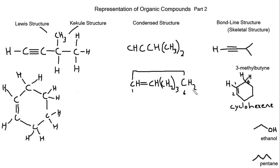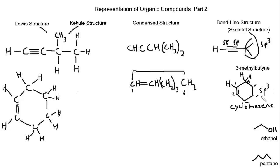Hopefully that helps, and hopefully you've made some connections between the types of carbons introduced. For 3-methylbutyne, the hybridization of the two triple-bond carbons is sp, and the three remaining carbons are all sp3 hybridized. Within the cyclohexene ring, four of the carbons are sp3, and the two carbons associated with the double bond are both sp2 hybridized. Thanks for watching — feel free to ask any questions and I'd be happy to discuss those.